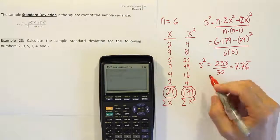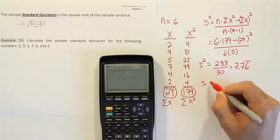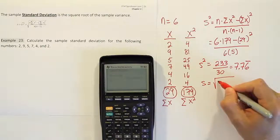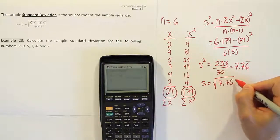We want the standard deviation. So the next step is to take the square root of our answer that we got for the variance. Square root of 7.76 repeating.